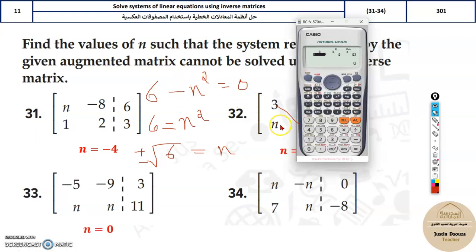The coefficient before n squared is 1. There's no n term, so it's 0. And lastly we have negative 6. The answer is square root 6 and negative square root 6. You can try solving the others the same way.